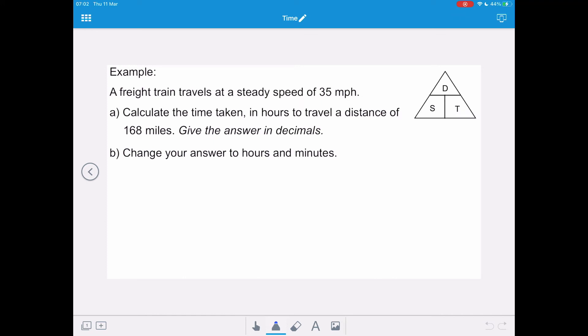Now in this example a freight train travels at a steady speed of 35 miles per hour. We want to calculate the time taken in hours to travel a distance of 168 miles and give the answer in decimals in part a and then change the answer to hours and minutes in part b. So we're looking for the time taken, and if we go to our triangle t equals d divided by s, time equals distance over speed.